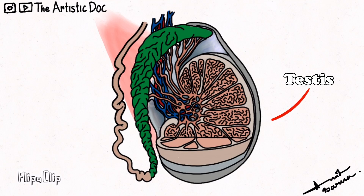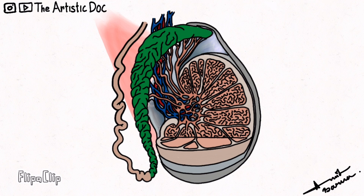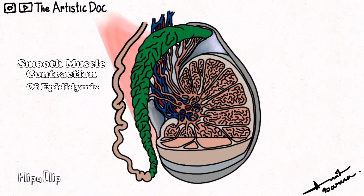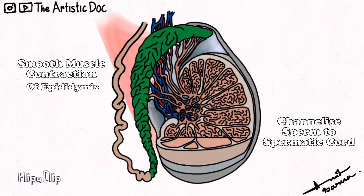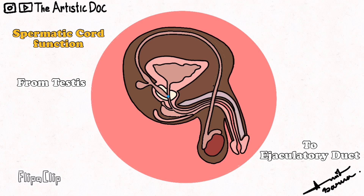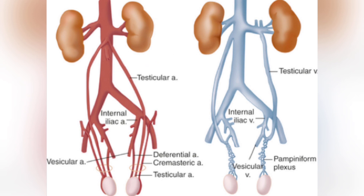Along with the testes, there is the epididymis and the distal part of the spermatic cord inside the scrotum. The epididymis helps in the maturation of the sperm and contracts to channelize the sperms to the spermatic cord. The vas deferens carries the sperm from the testes to the ejaculatory duct. The testes is supplied by the testicular arteries, which directly derive from the abdominal aorta, and venous drainage is by the pampiniform plexus of veins.